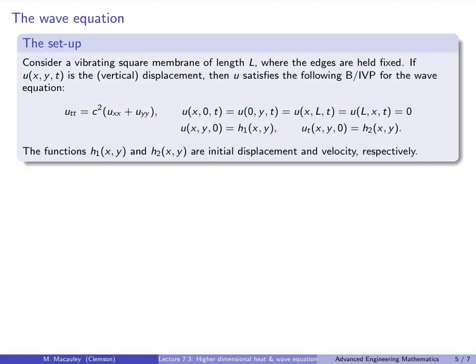The remainder of this lecture will be focused on the wave equation. Consider a vibrating square membrane of length L — maybe a trampoline in a gymnasium. The edges are held fixed, and u(x, y, t) represents the vertical displacement at position (x, y) at time t. Then u satisfies the wave equation: u_tt equals c squared Laplacian of u, with four zero boundary conditions saying the sides are all held fixed, an initial displacement u(x, y, 0) equals h₁(x, y), and initial velocity u_t(x, y, 0) equals h₂(x, y).